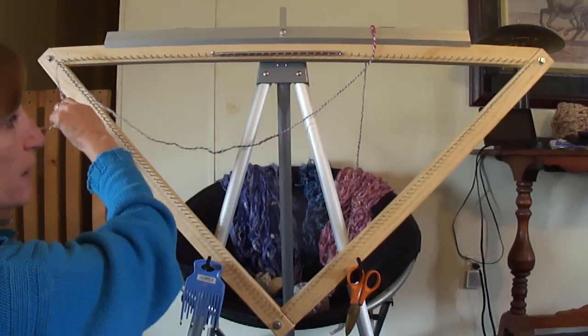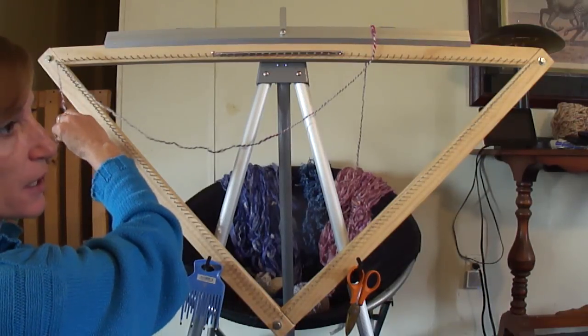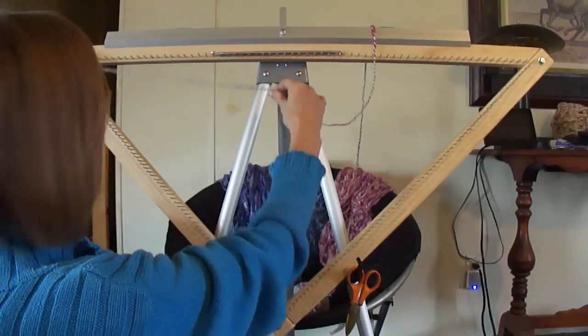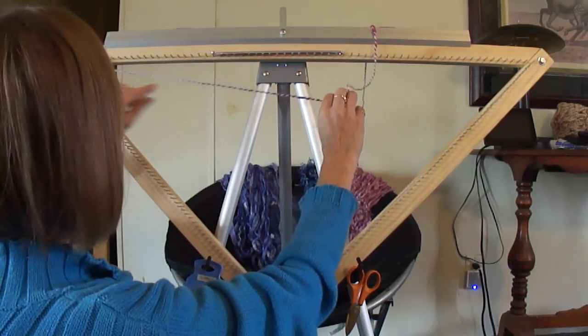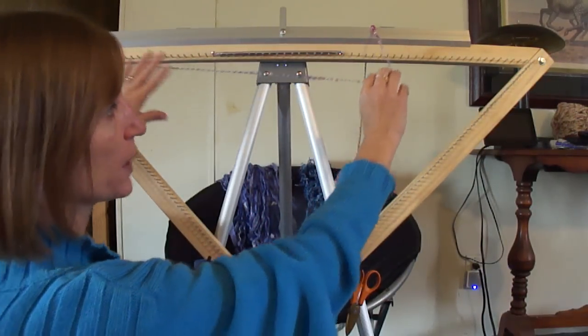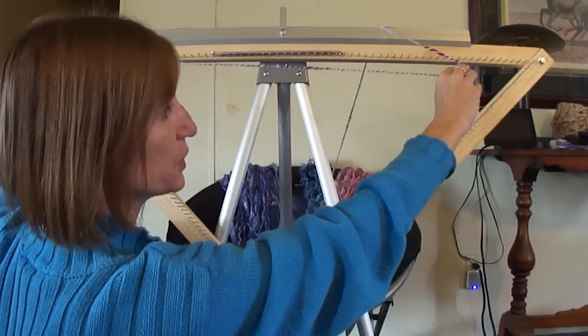Any fringe that I think is going to come undone, I'll tie a small knot in. This loop is going to be your weaving all the way across. Everything you do on the left, you do on the right.